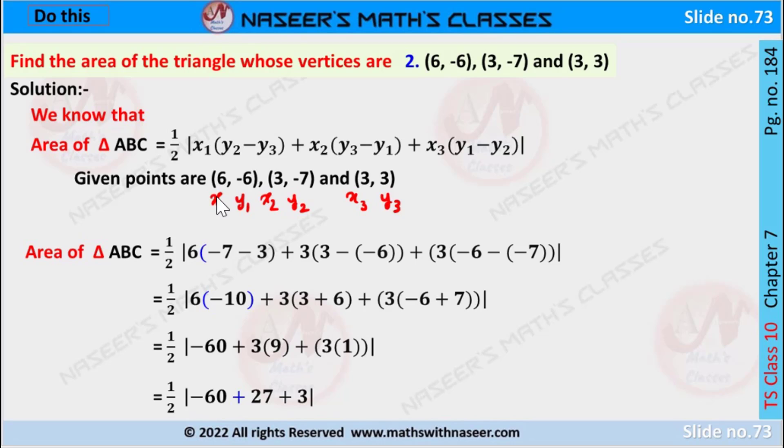First we read the given points: (6, -6), (3, -7), and (3, 3). Here x₁ is 6 and y₁ is -6, x₂ is 3 and y₂ is -7, x₃ is 3 and y₃ is 3.